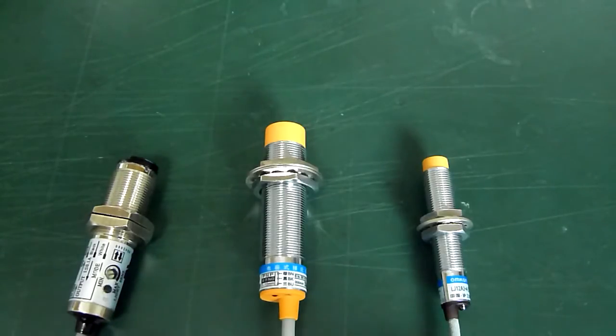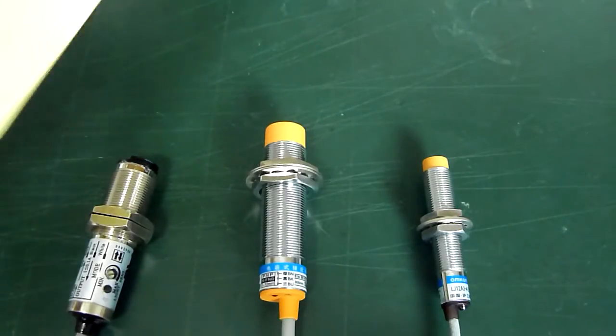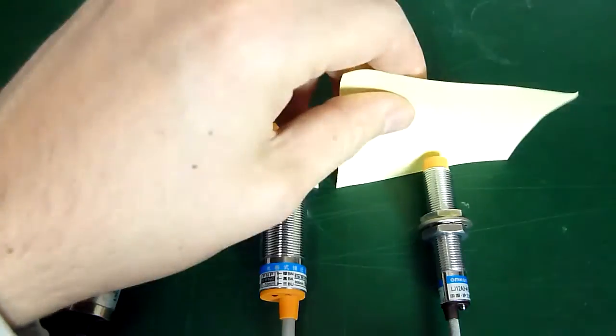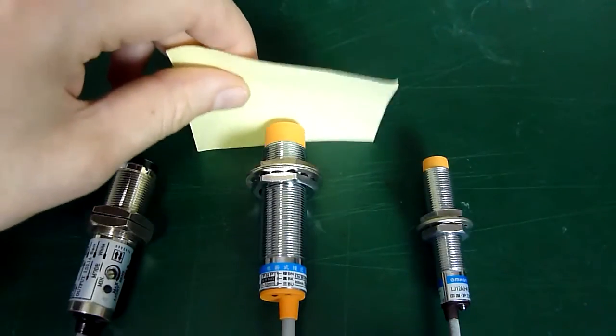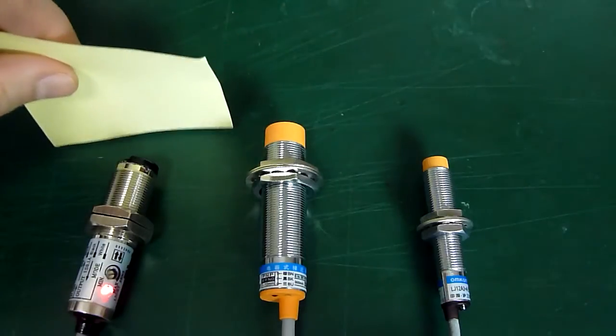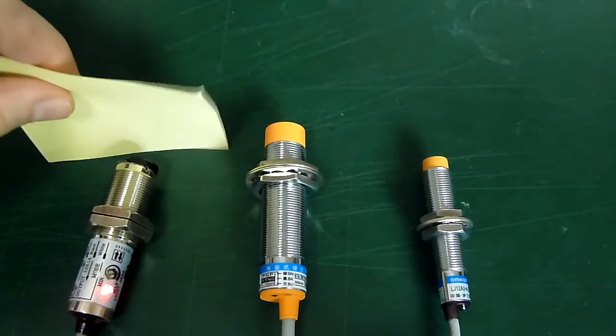Putting these 3 sensors together can make for some interesting applications. For example, you can see that some paper will not trigger the inductive sensor, will not trigger the capacitive sensor, but will trigger the proximity sensor.